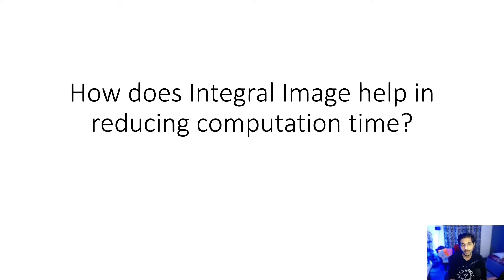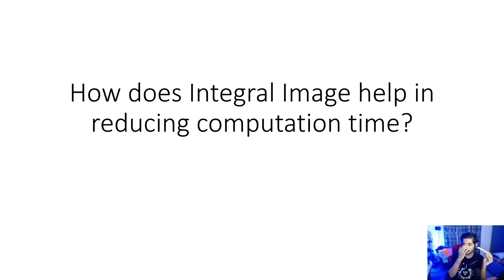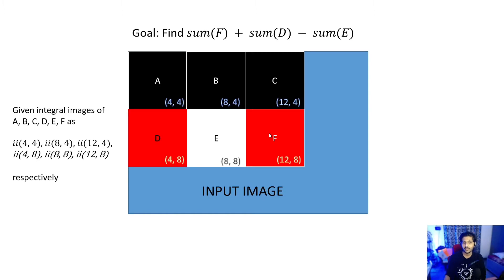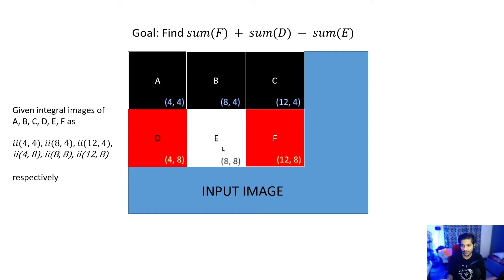For those who remember what rectangular features are — we had three rectangles: one on the right eye, one on the left eye, one on the nose. Imagine we have three rectangles. What we want is to find the difference between the sum of two rectangles on the eyes and the nose. E is the nose part, F and D are the left and right eyes. We need to find sum of F plus sum of D minus sum of E. This is our final goal.